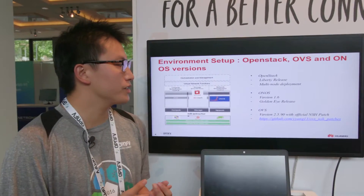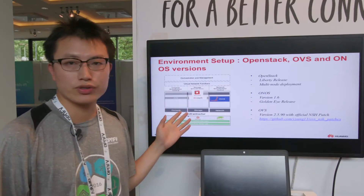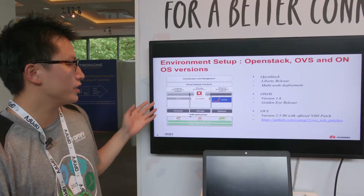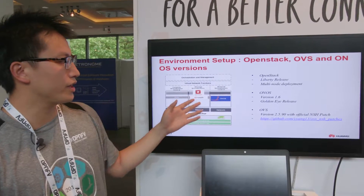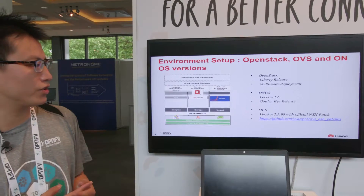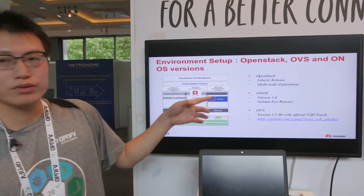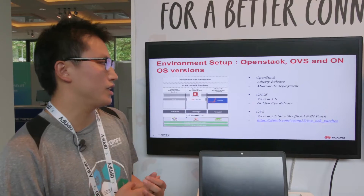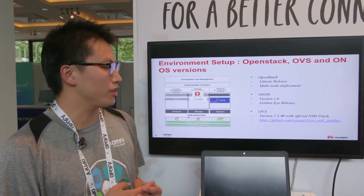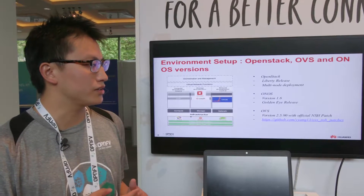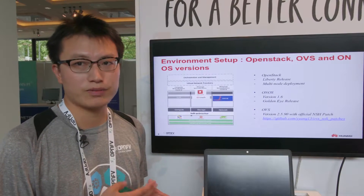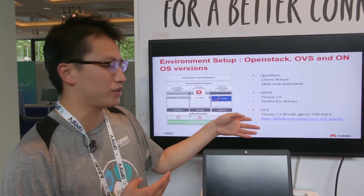Let's talk about the environment setup. As the picture shows, here is the OPNFV architecture. For the orchestrator layer, we use OpenStack. For the network layer, we use the ONOS controller. In the data plane, we use Open vSwitch. The OpenStack we use is the Liberty release with multi-node deployment. ONOS uses the Golden Eye release. The Open vSwitch uses the version with the official NSH patch, and we can get the patch from the provided address.